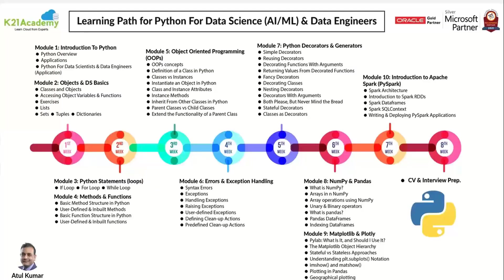Let me show you the learning path of our course. The course is divided into eight weeks. In the first week, we deal with basic concepts like introduction to Python objects and the basics. Then we move to looping statements. In the third week, we cover OOP concepts. In the fourth week, we deal with exception handling and error management. Weeks five and six cover generators, NumPy, Pandas, Matplotlib, and Plotly — libraries you need when starting with data science. In week seven, you'll be introduced to big data and Apache technologies. Finally, in week eight, we walk you through building your CV and interview preparation.